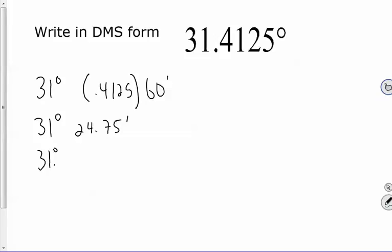So then what I'm going to do is I'm going to take that 24.75, so 31 degrees, I'm going to take that 24 minutes. I'm going to take the leftover 0.75 and I'm actually going to multiply that by 60 seconds. So then now I get 31 degrees, 24 minutes, and 45 seconds. So whichever one works for you is totally best. So let's move on.